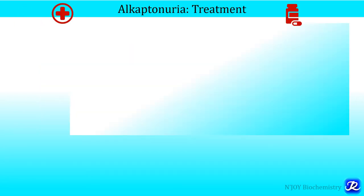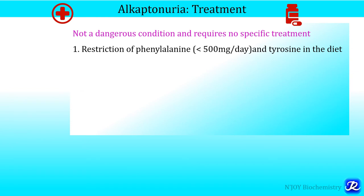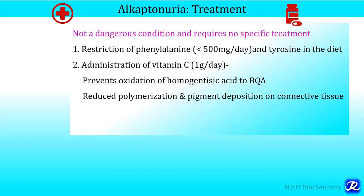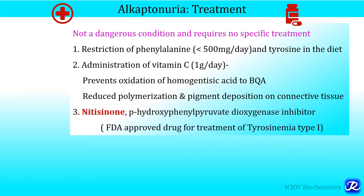How is alkaptonuria managed? It is not a dangerous condition and does not require any specific treatment. Restriction of phenylalanine and tyrosine in the diet should be done, with intake less than 500 mg per day. Administration of vitamin C at one gram per day is very important because it prevents oxidation of homogentisic acid to benzoquinone acetate, reducing polymerization and pigment deposition on connective tissue due to its antioxidant properties. The FDA-approved drug nitisinone, used for tyrosinemia type 1, can also be given to treat alkaptonuria.